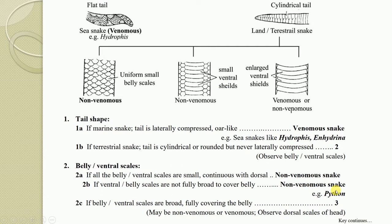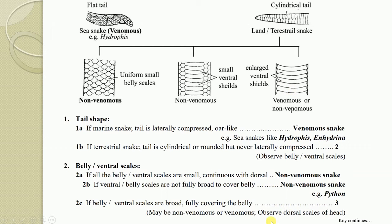If that character is not applicable, follow the next key. Key 2C: If the belly or ventral scales are broad and fully covering the whole belly surface, that snake may be venomous or non-venomous. These broad ventral scales are more commonly found in venomous snakes, but some non-venomous snakes also have enlarged ventral shields covering the whole belly. To avoid ambiguity, follow the next key — observe the dorsal scales on the head region.